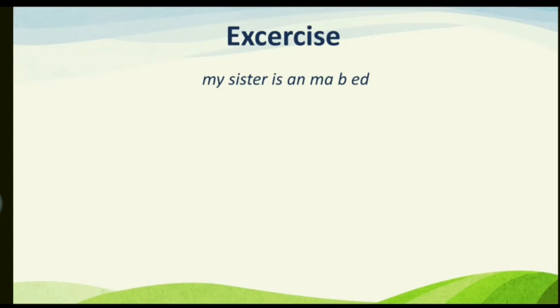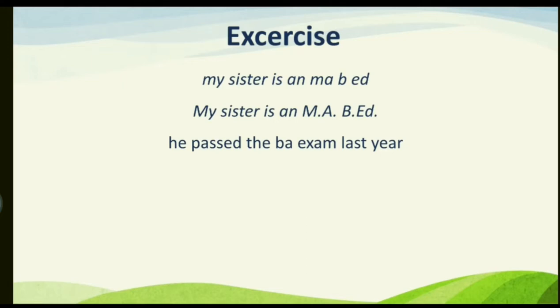Exercise: punctuate 'my sister is an MA BEd.' We write: 'My sister is an M.A. B.Ed.' — M.A. and B.Ed. are abbreviations. Another sentence: 'he passed the BA exam last year.' We punctuate it as: 'He passed the B.A. exam last year.' — B.A. is an abbreviated form of Bachelor of Arts, so it is written as capital B dot, capital A dot.